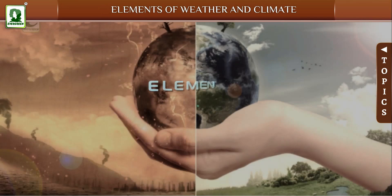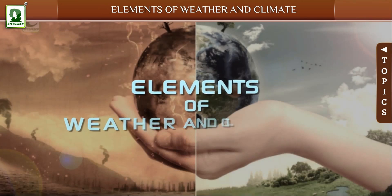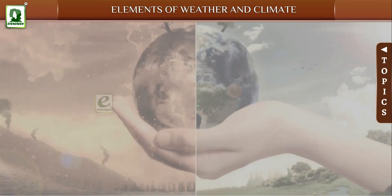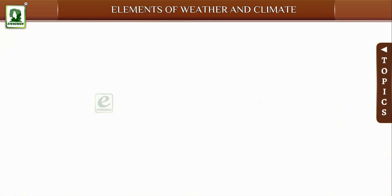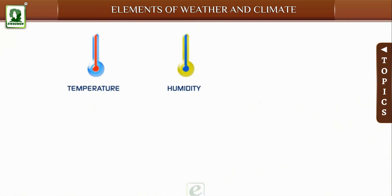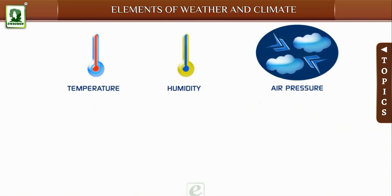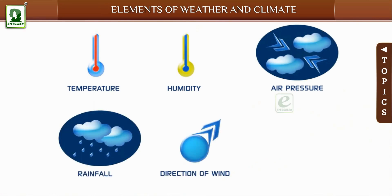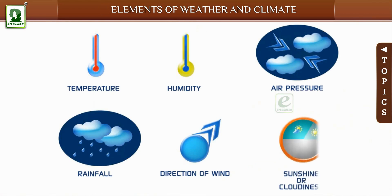Elements of weather and climate include: temperature, humidity, air pressure, rainfall, direction of wind, and sunshine or cloudiness.